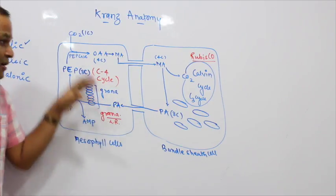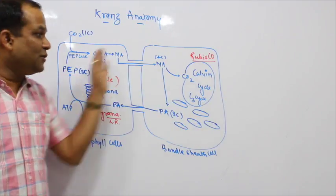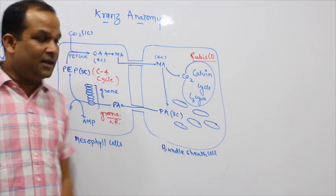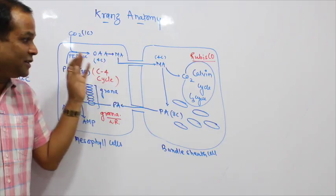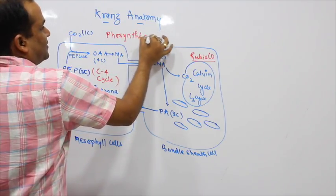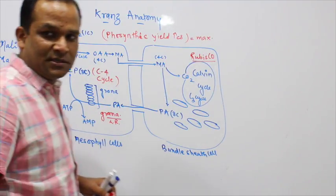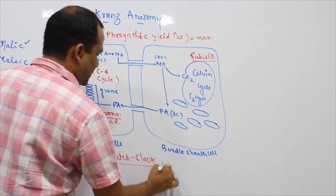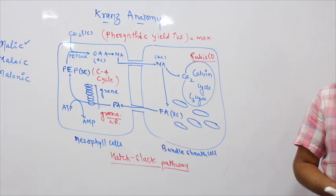Because oxygen released during the light reaction stays in the mesophyll cell and does not reach the bundle sheath cell where RuBisCO operates, photorespiration is almost nil in C4 plants. Since photorespiration is suppressed, photosynthetic yield increases. This pathway was discovered by Hatch and Slack, and is therefore known as the Hatch and Slack pathway.